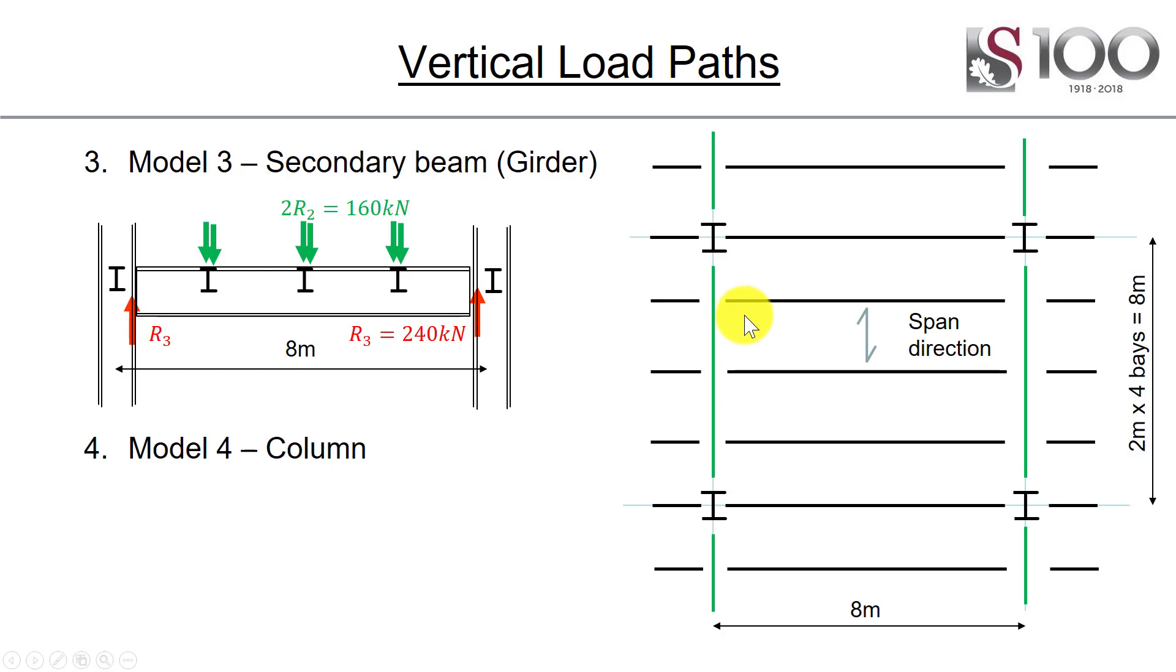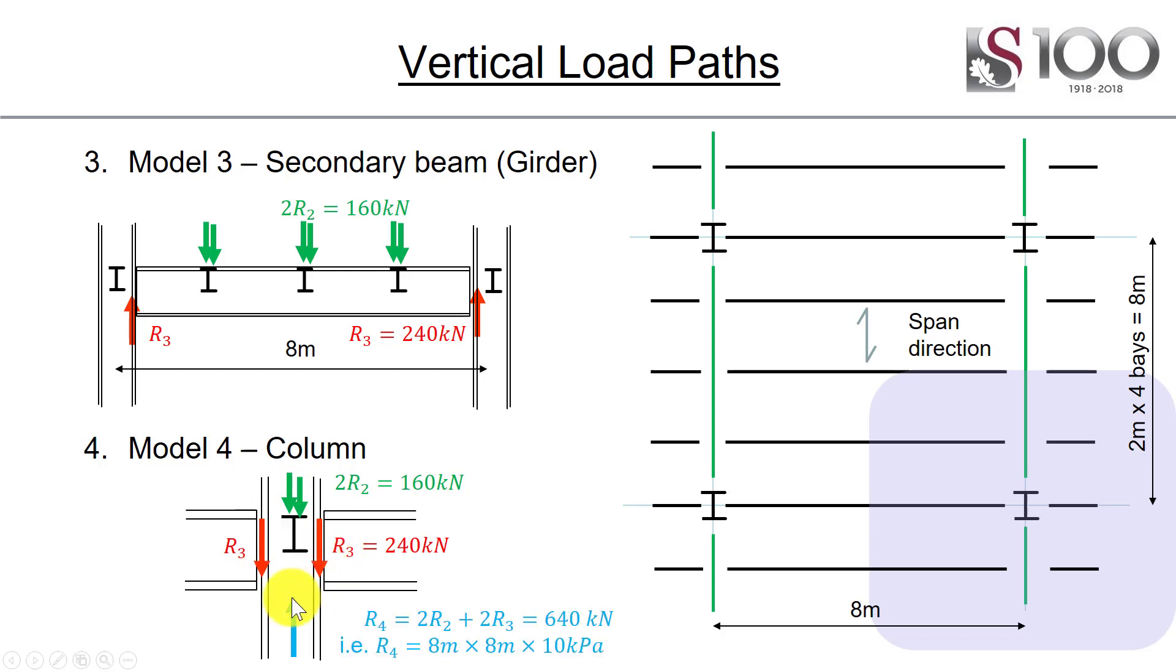So now when it comes to the column model, so here we have a cross-section of our column. We've got our primary beams coming in from the one side, our secondary beams from the other. That gives us the total tributary area we have covered. So there's our two beams, the two primary beams. There's our two secondary beams applying load. And then we have a total reaction of about 640 kilonewtons. And that then is just the total area, 8 meters by 8 meters times 10 kPa.